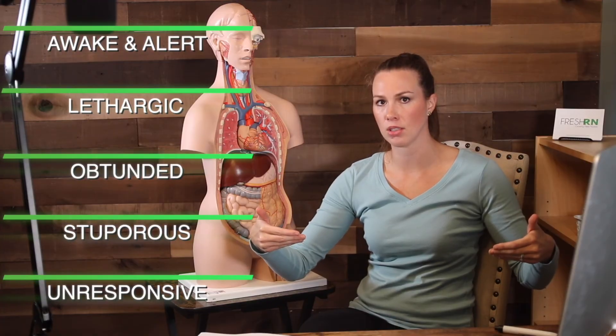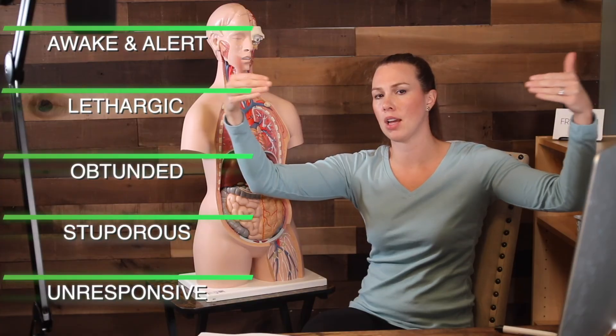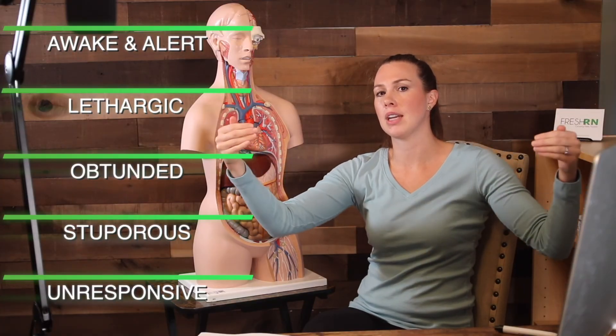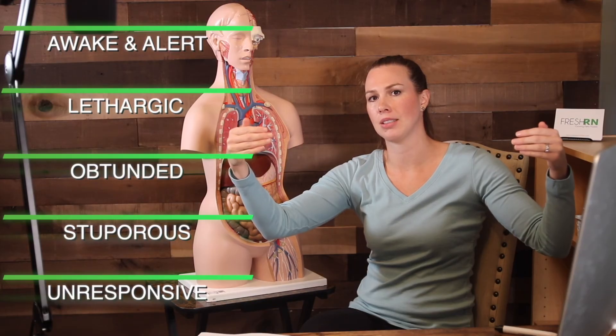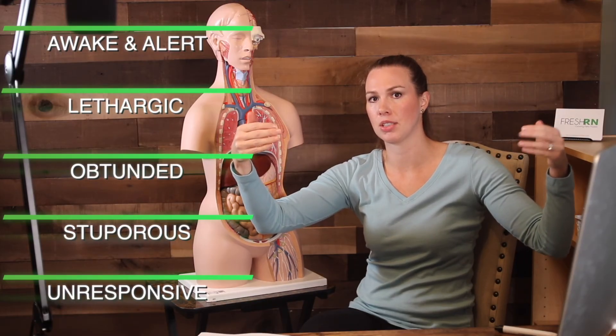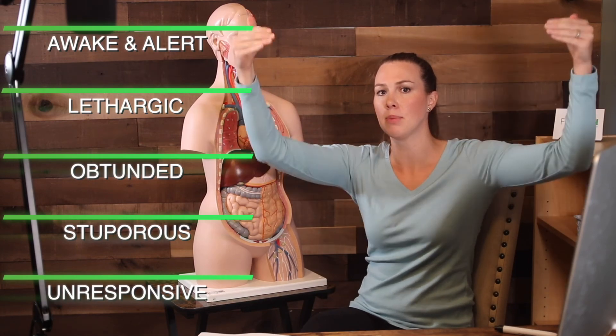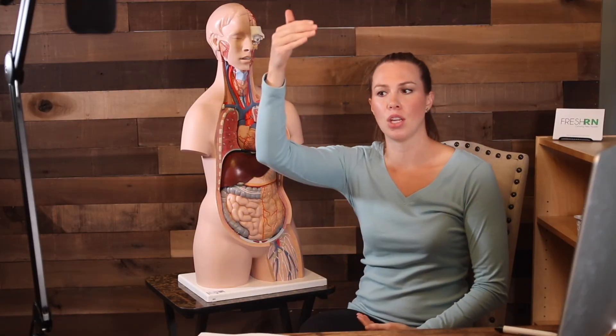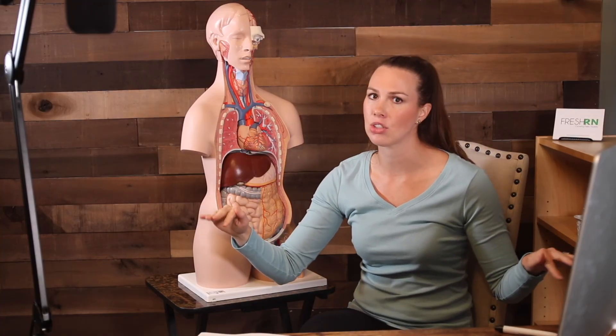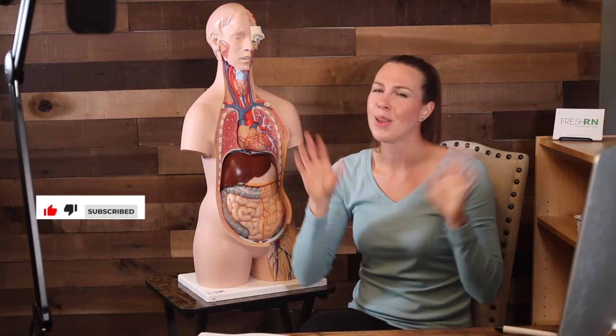So those are your levels: awake and alert, lethargic, obtunded, stuporous, unresponsive. You want to know — did I start here today but now it's taking a lot more work to wake them up? Going from awake and alert to obtunded is a big change. It's important to know where on that scale your patient is so you can detect when it changes. Have a very clear understanding of their level of consciousness at your first assessment at the beginning of the shift. For more neuro nurse resources, check the description for free links and a comprehensive neuro course.